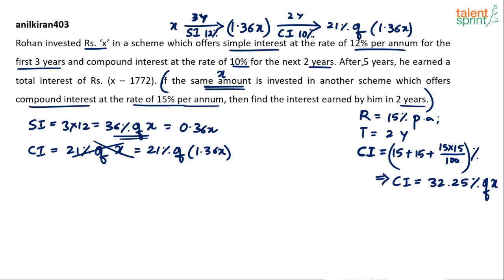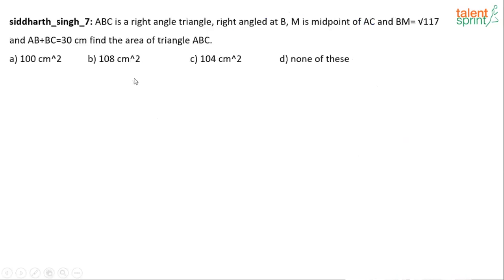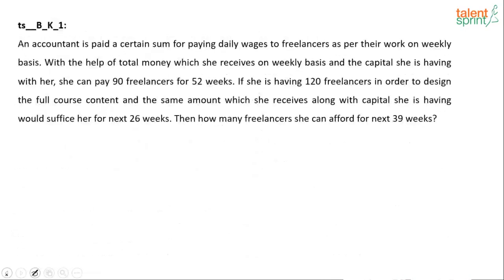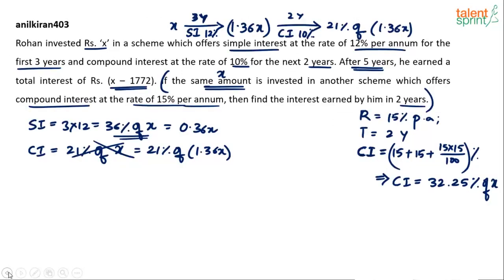After five years — meaning these three years plus two years — he earned a total interest of rupees x minus 1772. The total interest equals x minus 1772. To find the total interest we have earned, we set up the equation.